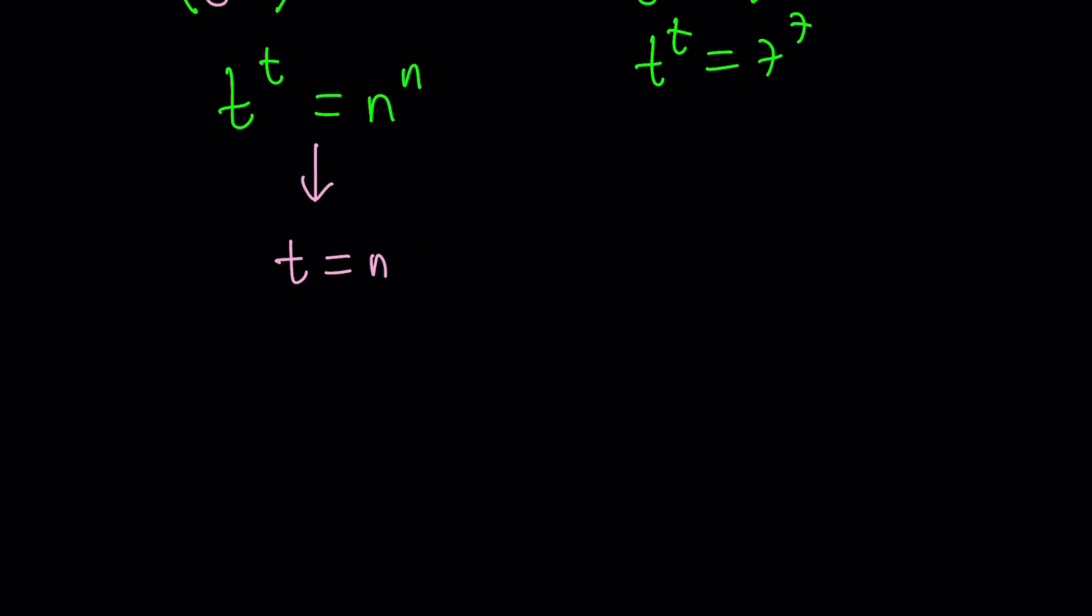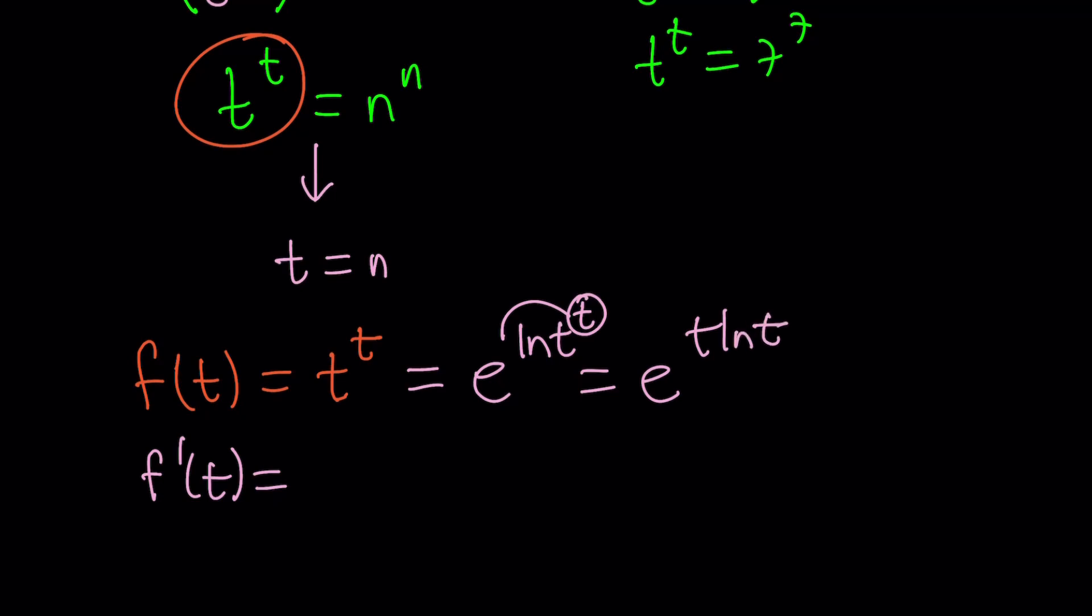Now my function is a lot simpler now because I'm going to be looking at t to the power t. So suppose f of t equals t to the power t. Let's go ahead and differentiate this function, f prime. Now how do you differentiate it? Well you could write it as e to the ln t to the t.